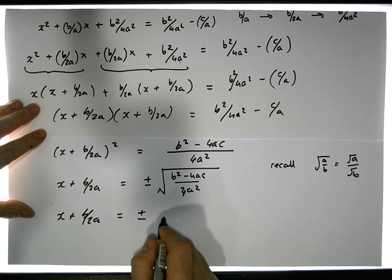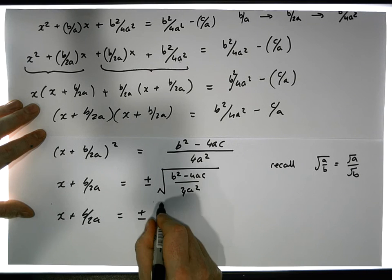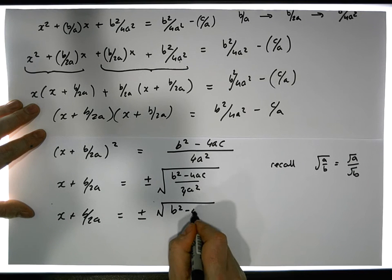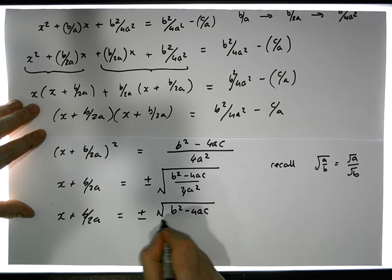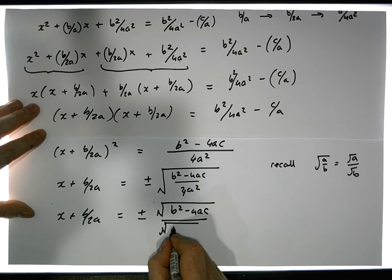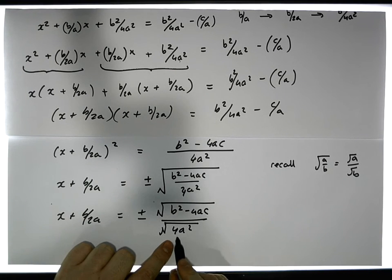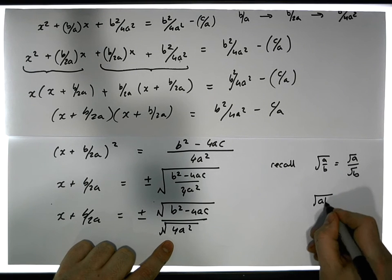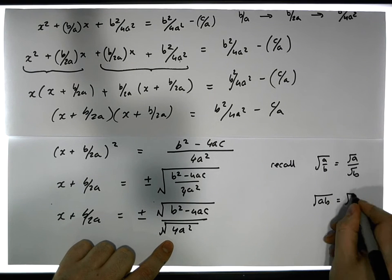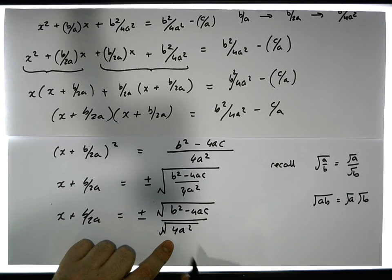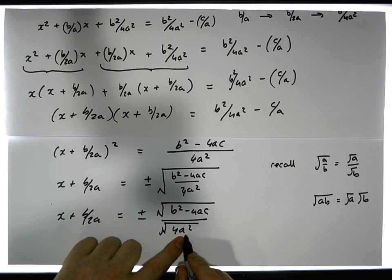This becomes x + b/2a equals plus or minus the square root of (b squared minus 4ac), all over the square root of 4a squared. The square root of 4a squared — recall that the root of a times b equals root a times root b — so the square root of 4 is 2, and the square root of a squared is a, giving us 2a.